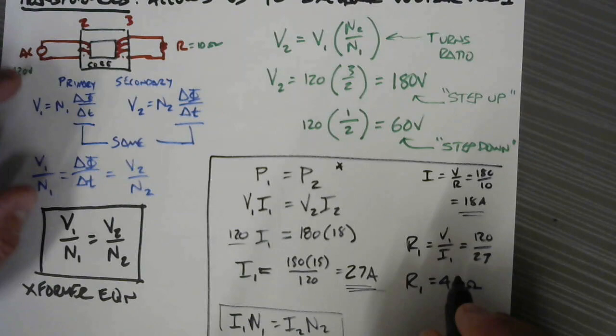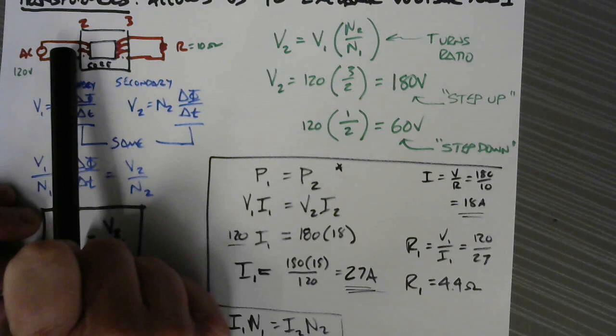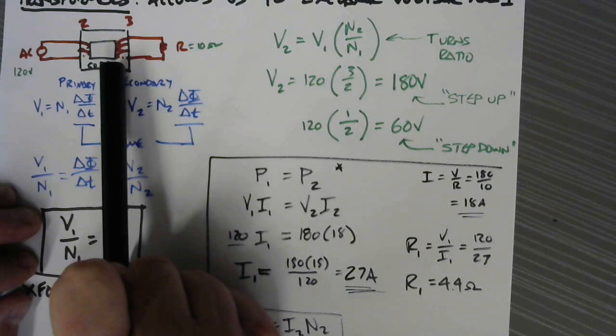So let's review here on transformers. A transformer is created by taking one set of windings on some sort of iron core to generate a magnetic field and another set of windings to pick it up.